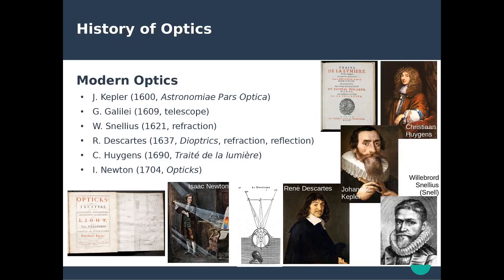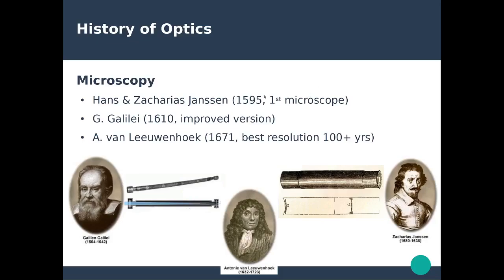Modern optics includes many well-known names. Johannes Kepler and Galileo did work in the 17th century mostly focused on astronomical developments. Snell developed the first rigorously mathematically derived laws of refraction, though he did not publish his work. Independently, René Descartes developed the same laws using a different approach and published them in his Dioptrique. Christiaan Huygens and Isaac Newton published closely in time their foundational works — Traité de la Lumière (Treatise on Light) and Opticks — laying the foundations for modern optics as we know it today.